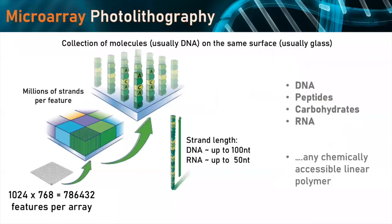We make these nucleic acid libraries as microarrays, so here's a short introduction on what microarrays are. Microarrays are collections of molecules, usually DNA, on the same surface, usually glass. There are typically two ways you can make microarrays: either you have a pre-synthesized DNA which you manually immobilize on the surface, or you directly synthesize those nucleic acids on the surface, which is what we do. The amount of DNA you can synthesize is limited by the resolution of your apparatus — in our case 1024 times 768, which is just under 800,000 different spots.